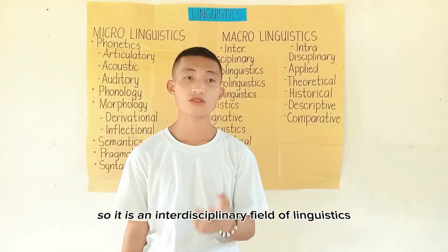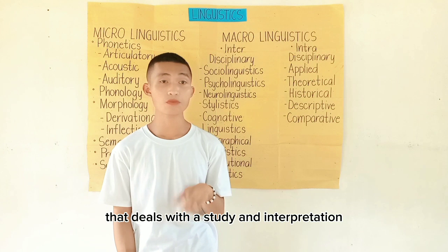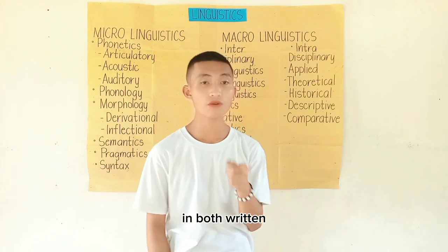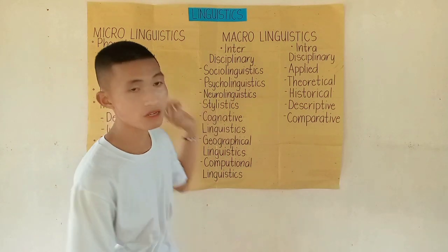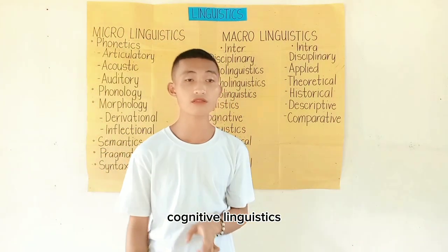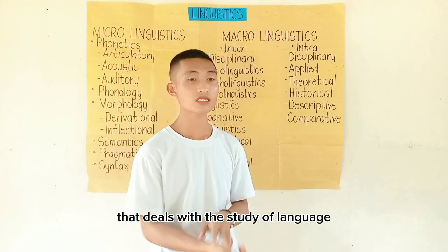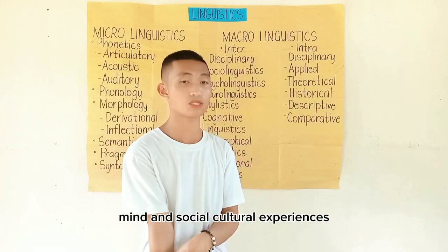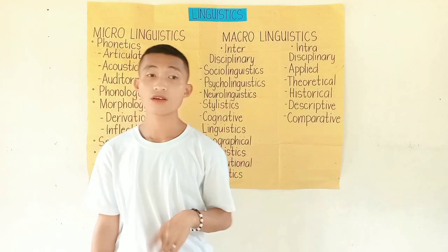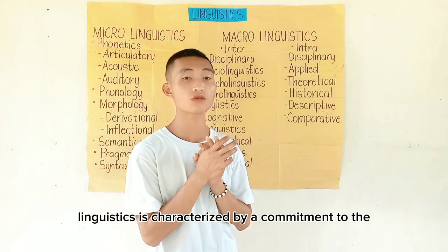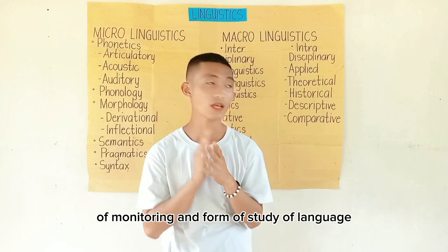Stylistics is an interdisciplinary field of linguistics that deals with the study and interpretation of style and tone in both written and spoken language. Cognitive linguistics is also an interdisciplinary field that deals with the study of language, mind, and socio-cultural experiences. It first emerged in the 1970s and is characterized by a commitment to the inseparability of meaning and form in the study of language.